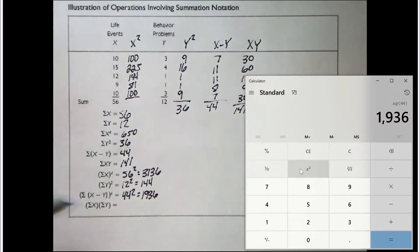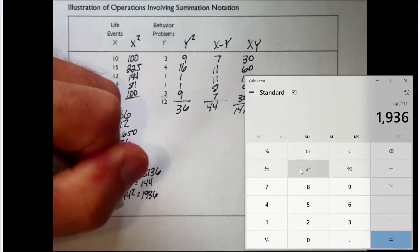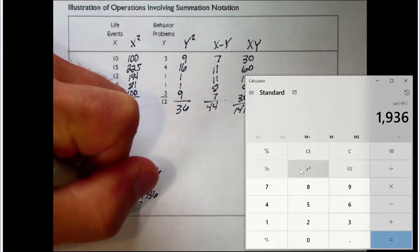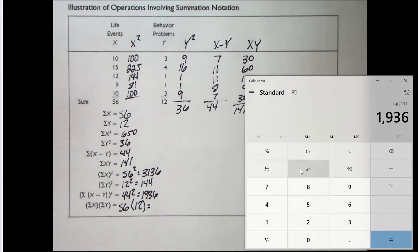And finally, we need the sum of X, that quantity, multiplied by the sum of Y, that quantity. Well, we already know the sum of X, and we already know the sum of Y. We need to take this quantity and multiply by this quantity. So we have 56 multiplied by 12. Using parentheses to show multiplication. So let's figure it out. 56 times 12 equals 672.